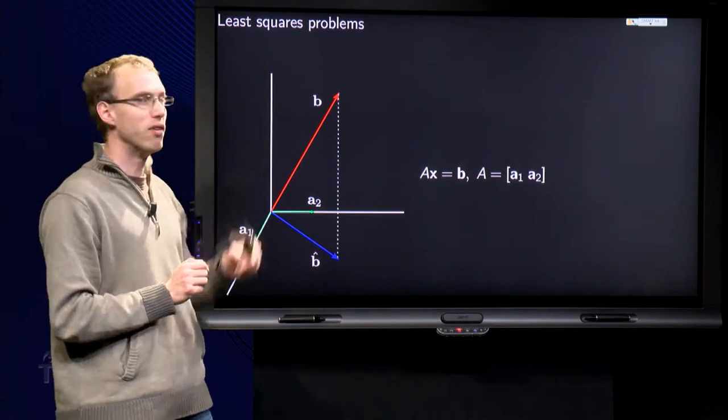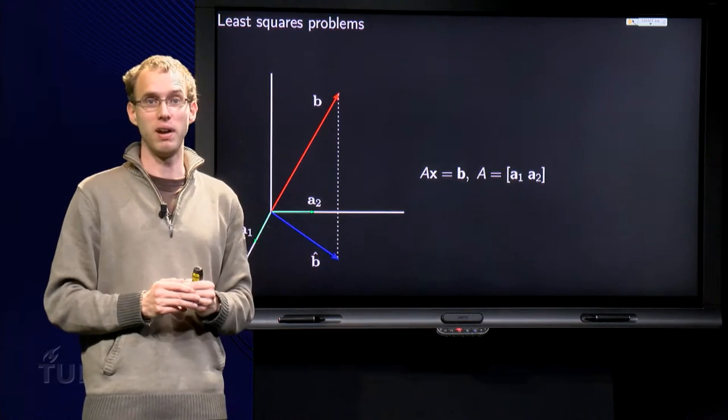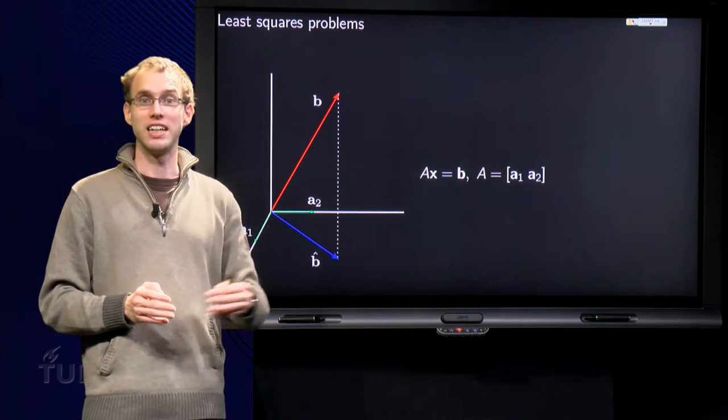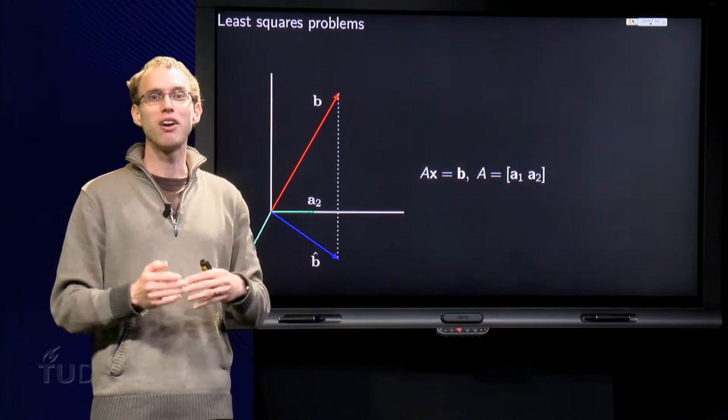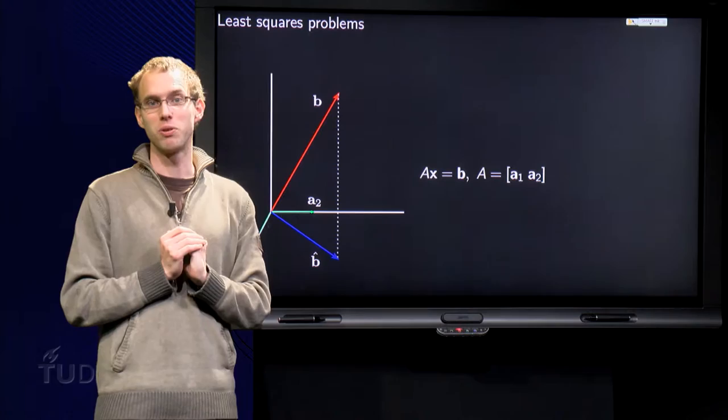Suppose now we have a b which is definitely not in the XY plane. Then AX = b will definitely be inconsistent. So what can we do? How can we make this system consistent?